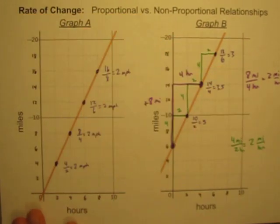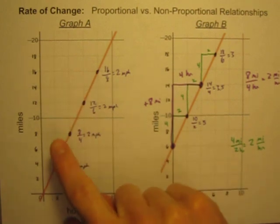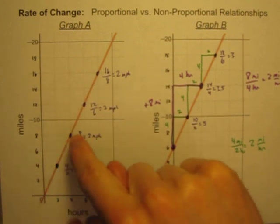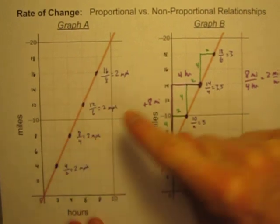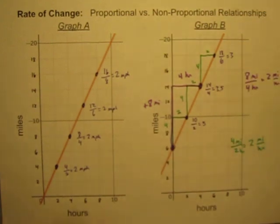So I hope that helps showing you the difference between calculating rates of change on graphs that have proportional relationships and graphs that have nonproportional relationships.